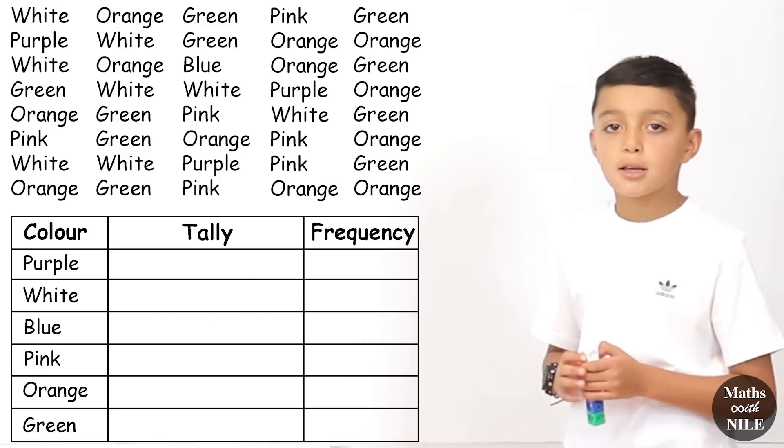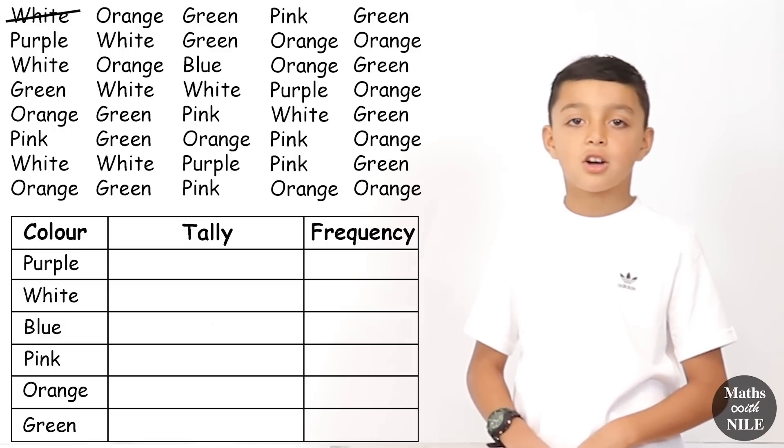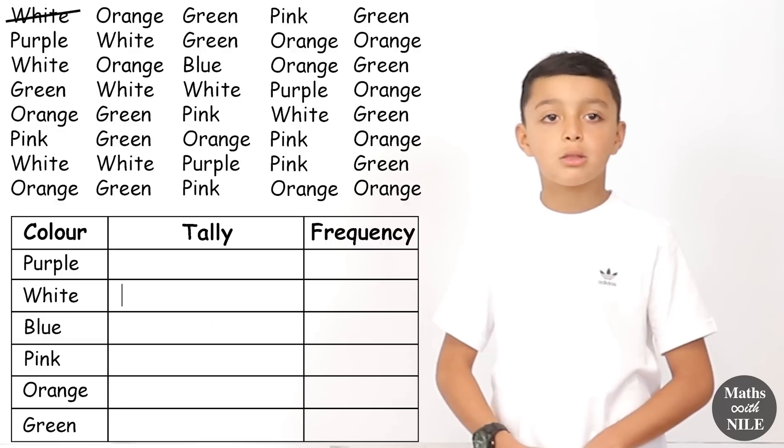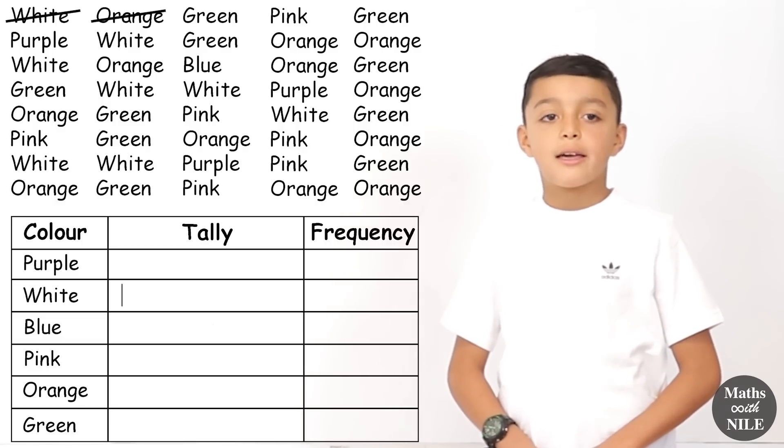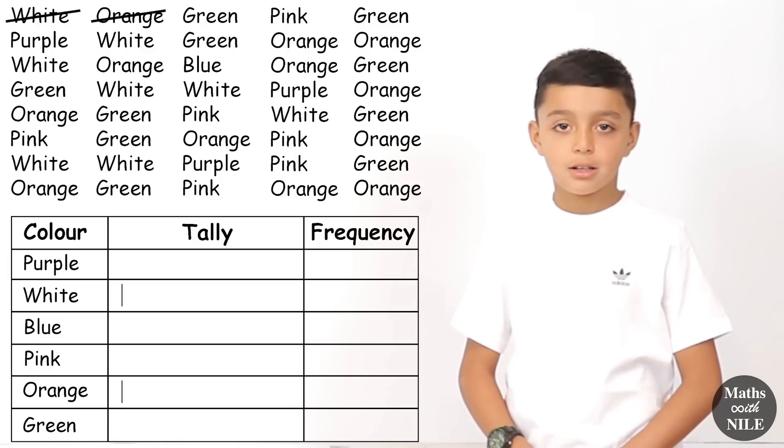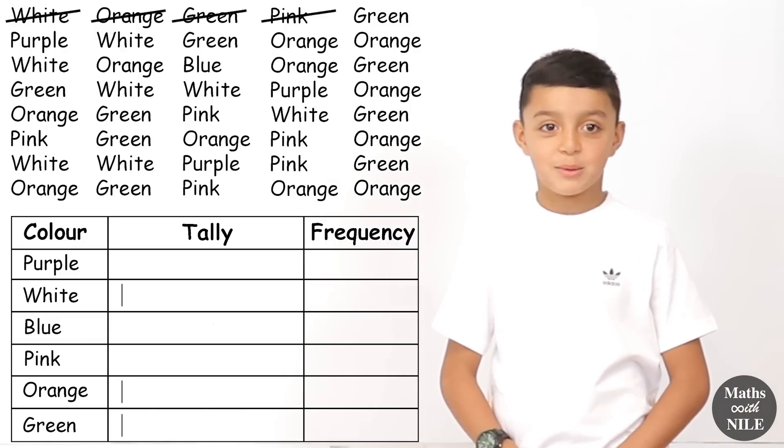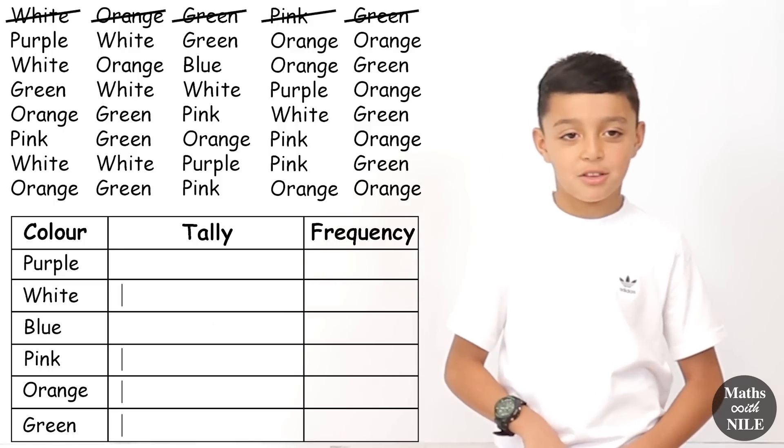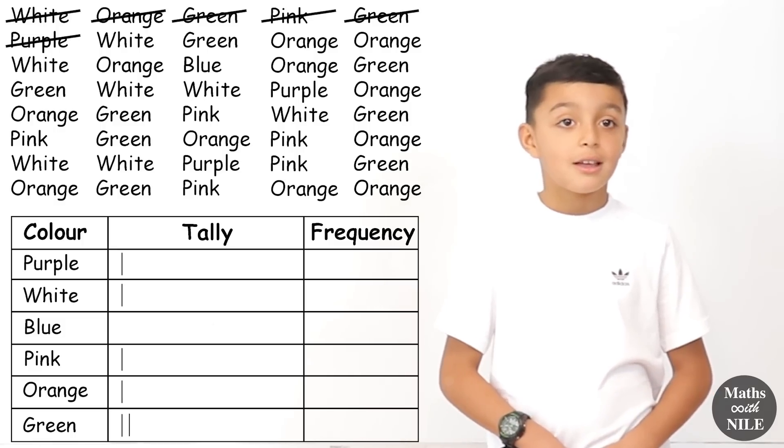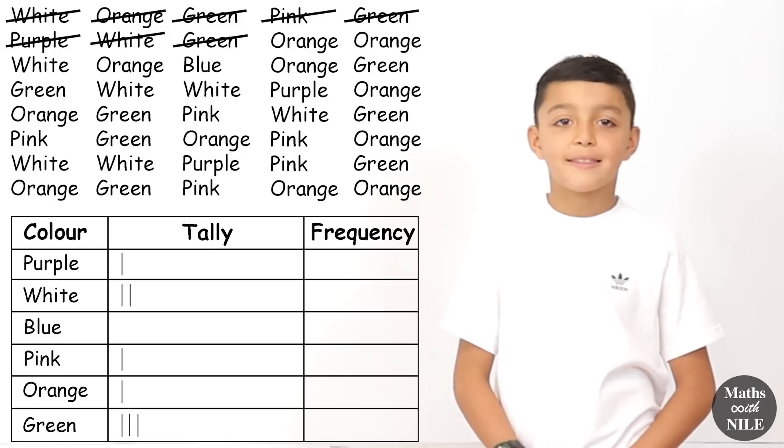So our first one is white. So we'll cross out white and then put one stroke in our tally chart next to white. And then our second one, we're doing it in rows. So my second one is orange. And then, so we've crossed it out and then I'll put it into my tally chart. And then green. So one stroke for orange, yes. Yeah, one stroke for orange. And then green, we'll do the same. And then pink, we'll do the same. And then we'll cross out green, put a second stroke to the tally chart. And then put one purple. And then put a white again. And then green. And then orange.